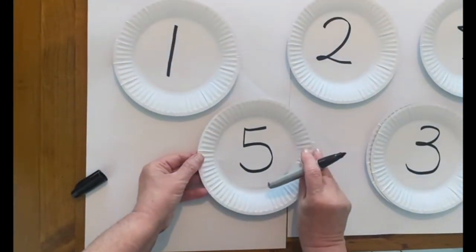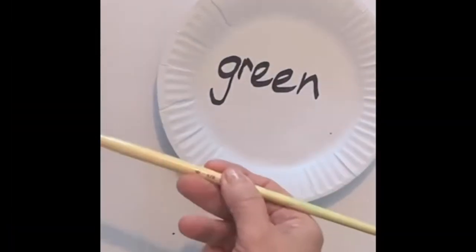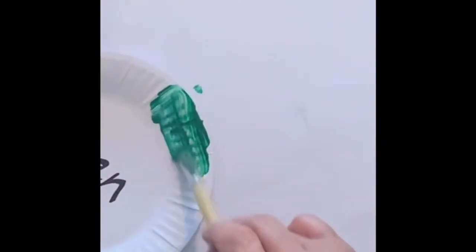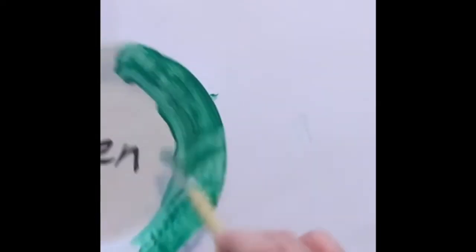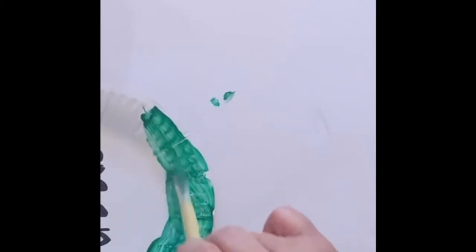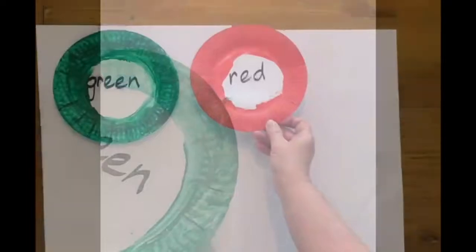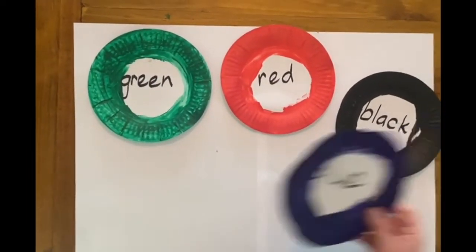Once you have your five paper plates you need to paint around the edges. So first of all in green, just around the edges, not all over the plate because that's going to be our ring. So just paint it on all around the edge for all our colors. Just around the edge. The colors are green, red, black, blue and yellow.